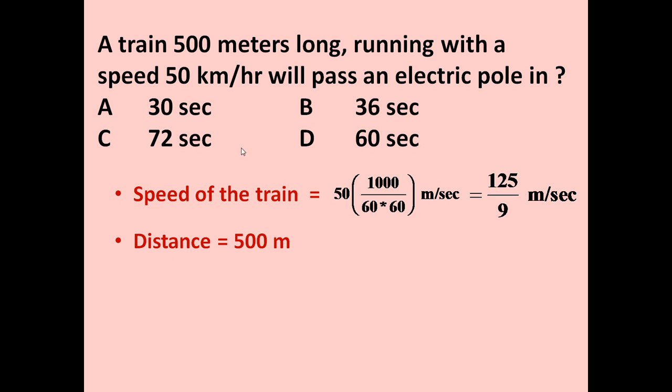Now we know distance is equal to 500 meters. Because the train has to cross the pole, so the total distance traveled by the train for crossing the pole will be 500 meters. Now we know the formula: time taken by the train to pass the pole, time is equal to distance upon speed.